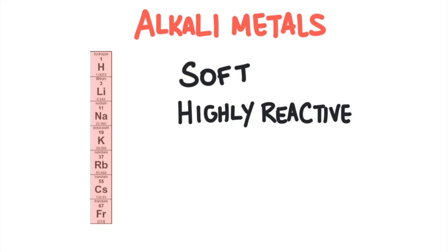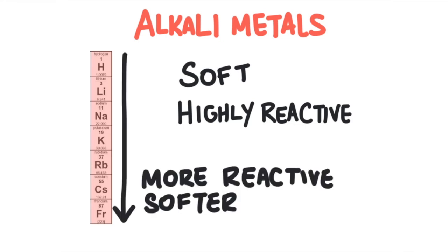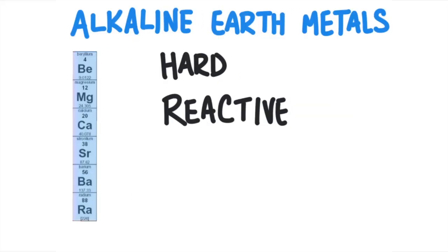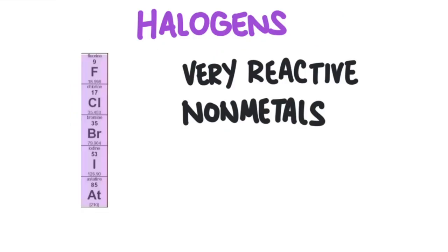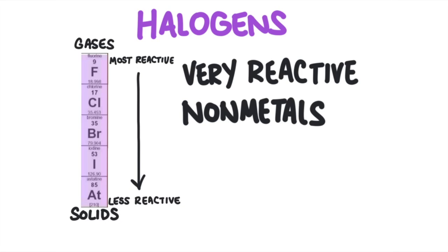Alkali metals are soft reactive metals. They become more reactive and softer as you move down the column. Alkaline earth metals are hard reactive metals, a little less reactive than the alkali metals. The transition metals are generally not as reactive as alkali or alkaline earth metals — they are solid metals except for mercury, which is a liquid at room temperature. Halogens are very reactive non-metals. They are gases at the top of the family and become solid as you move down the column. They are the most reactive elements on the periodic table, most reactive at the top, getting less reactive as you move down — opposite the trend of alkali metals.